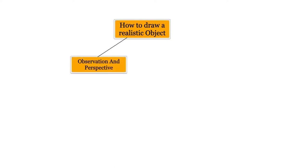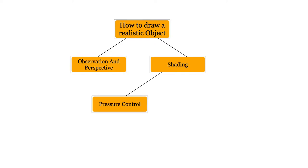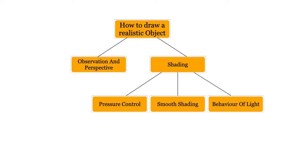There are two main aspects to draw a realistic object. One is observation and perspective, and the other is shading. Shading further has three important aspects to be taken care of: pressure control, smooth shading, and the behavior of light. Let's see one by one.